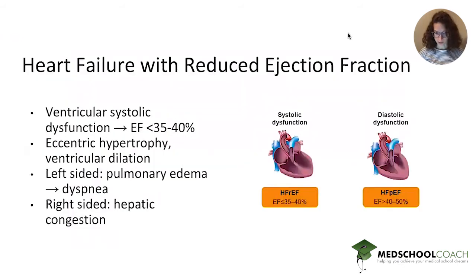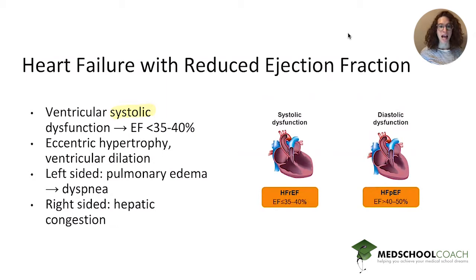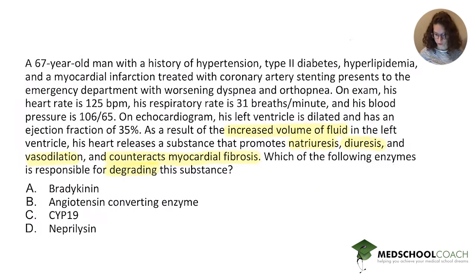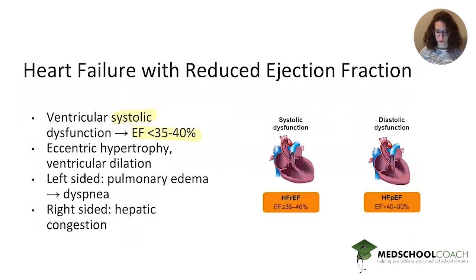This man has heart failure with reduced ejection fraction, which is characterized by ventricular systolic dysfunction. The ejection fraction is the percentage of the blood in the ventricle that is squeezed out with each systolic squeeze. In this case, the ejection fraction is less than 35 or 40%, and as we see in the question, this guy's ejection fraction is 35%. So he has heart failure with reduced ejection fraction, characterized by eccentric hypertrophy and ventricular dilation.